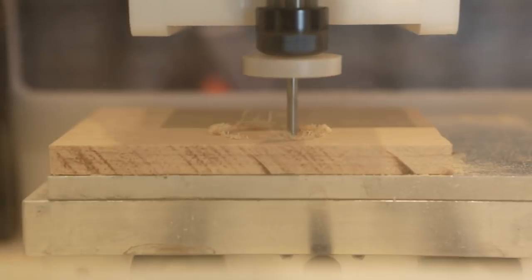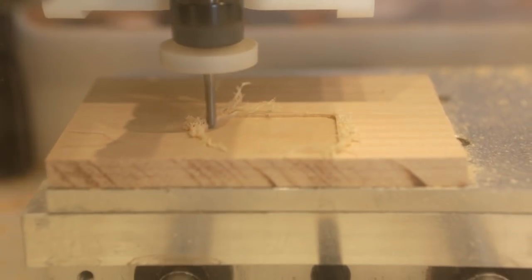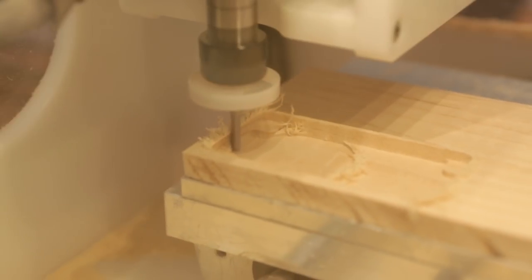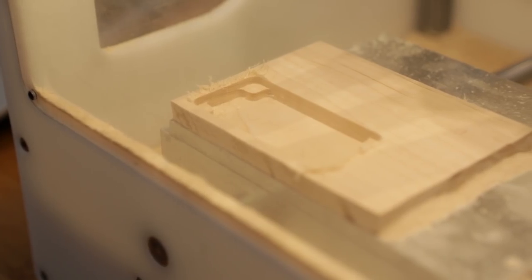The next operation is adaptive clearing. This is similar to facing but it generates a toolpath that follows this shape. This clears the material with sequential step downs. This operation takes the longest because it's removing most of the material.